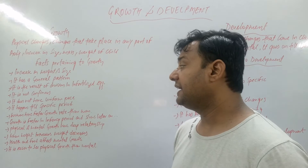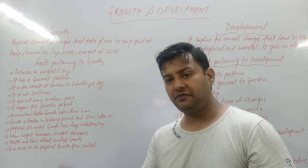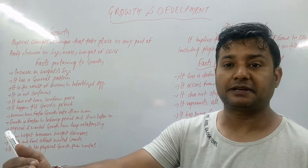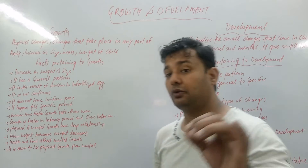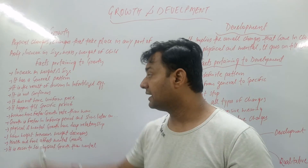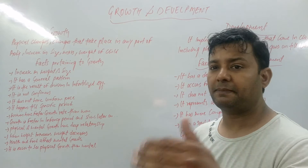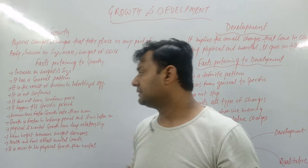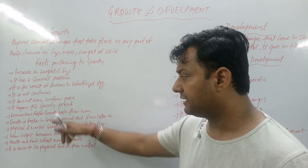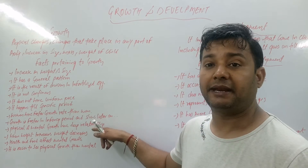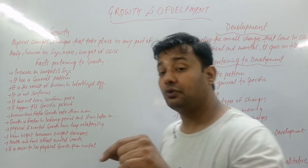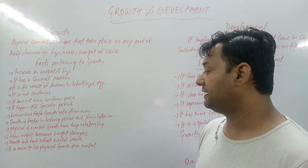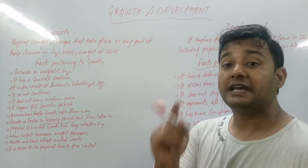Growth does not have a uniform pace — it varies. The pace keeps changing at different phases. Then it happens in a specific period — most probably for about 18 years the growth pace is changing. Also, women have a faster growth rate than men. Remember: women have a faster growth rate than men. Growth is fastest in the infancy period.